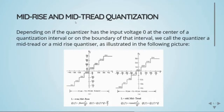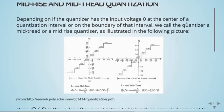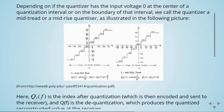Depending on whether the input voltage zero is at the center of a quantization interval or on the boundary of that interval, we call the quantizer a mid-tread or a mid-riser quantizer. The mid-tread quantizer has input voltage zero at the center of the quantization interval. The quantization index is obtained by rounding, and the reconstruction — or dequantization — is the quantization index times the step size.